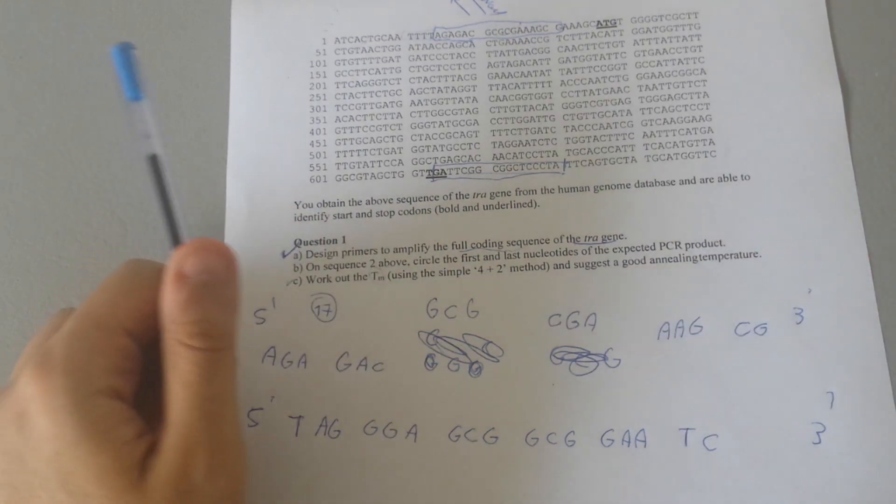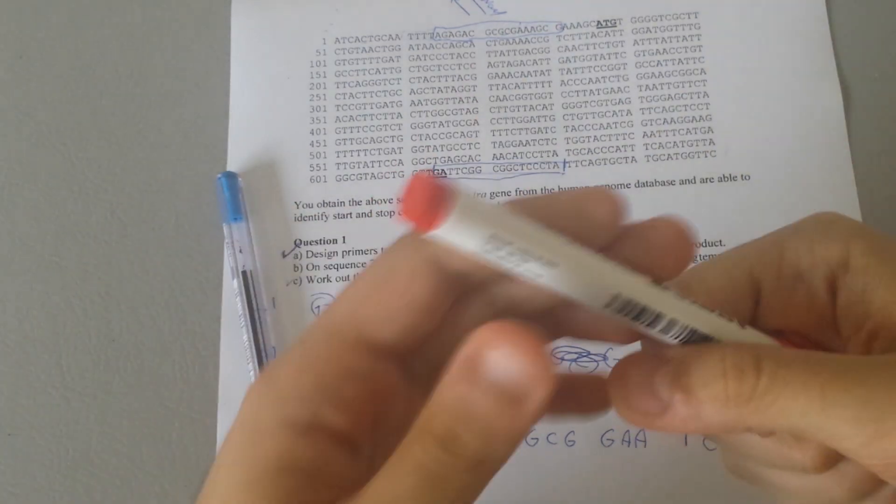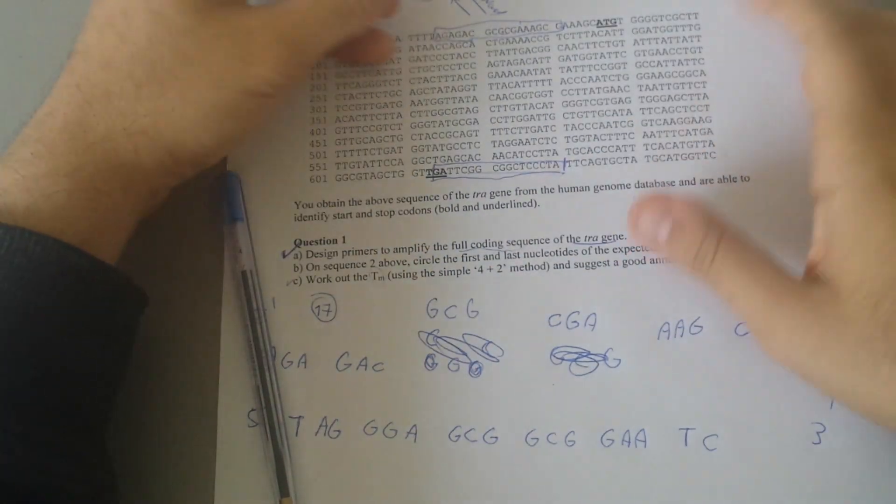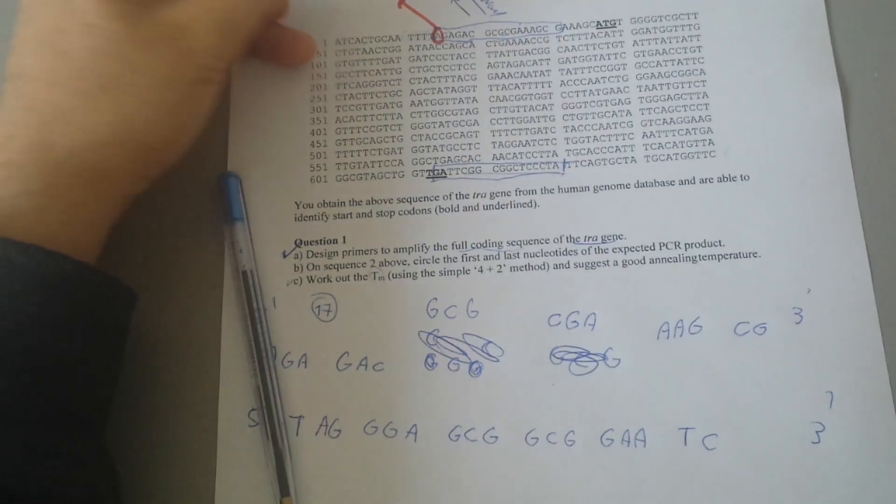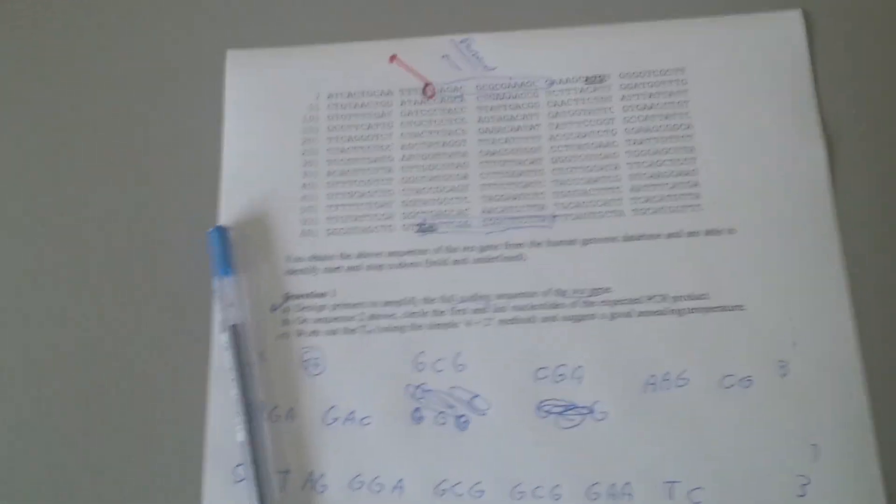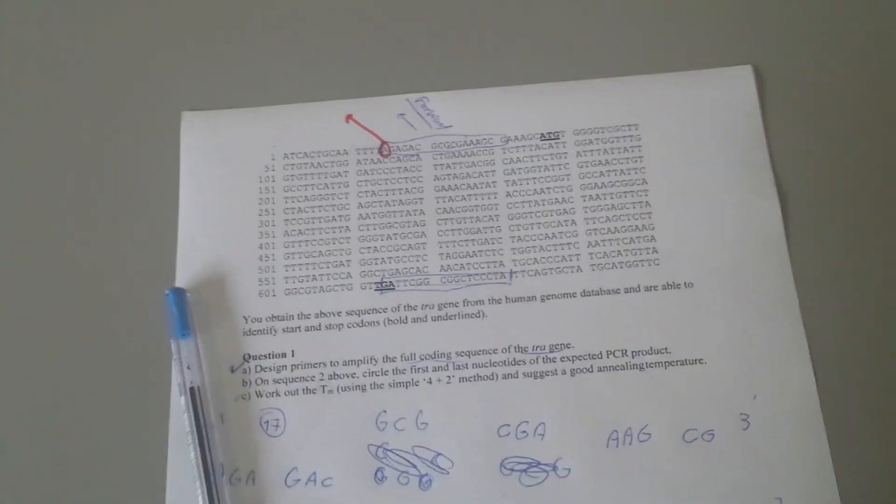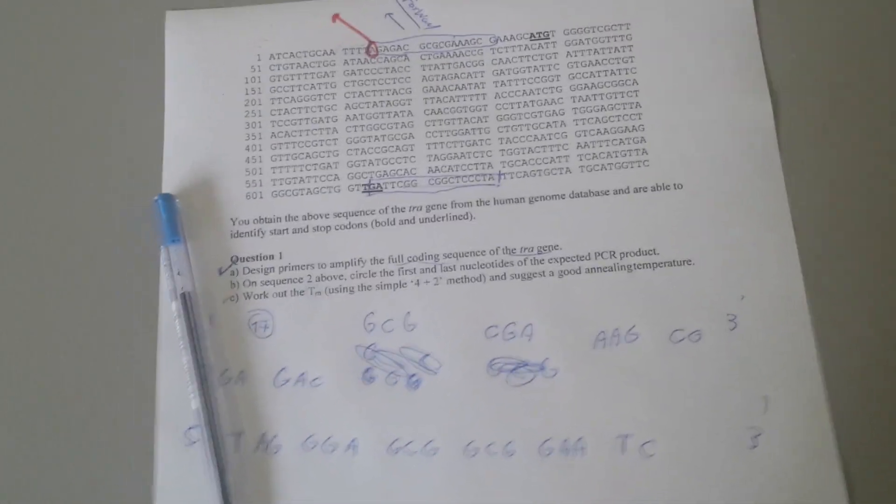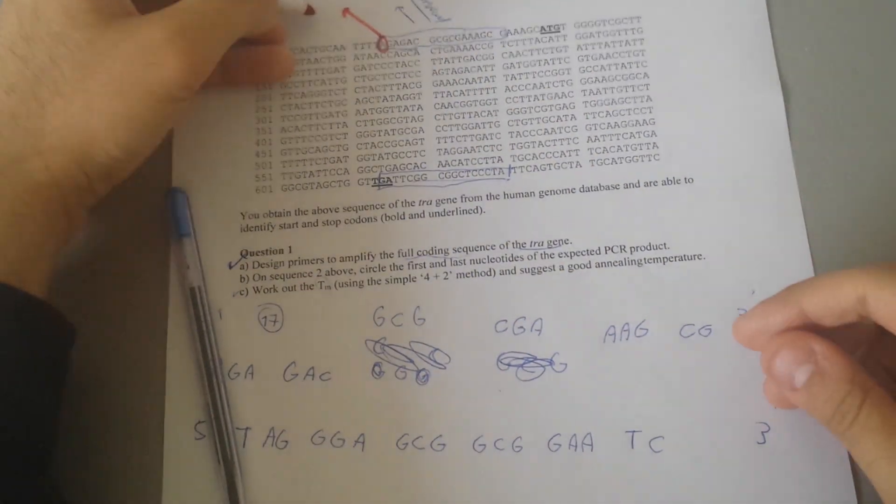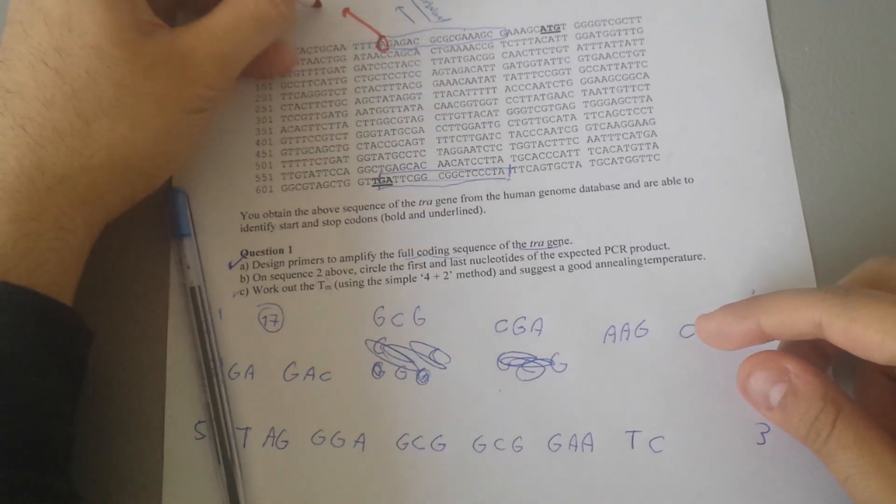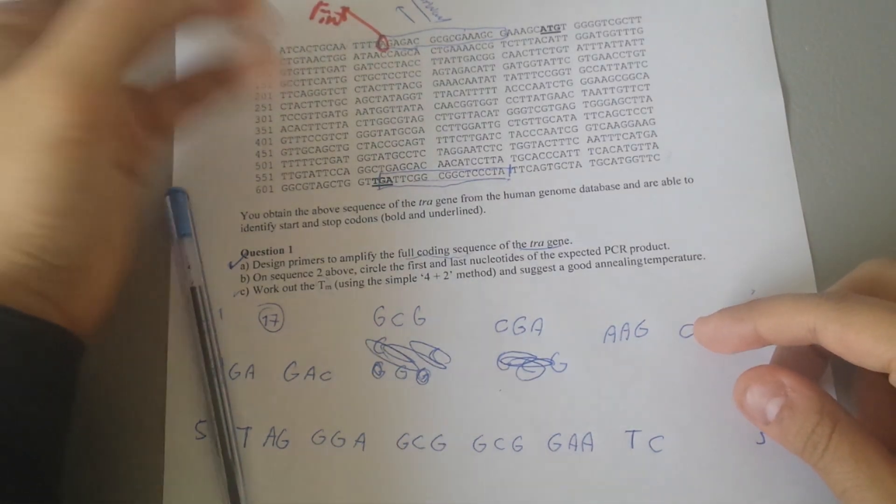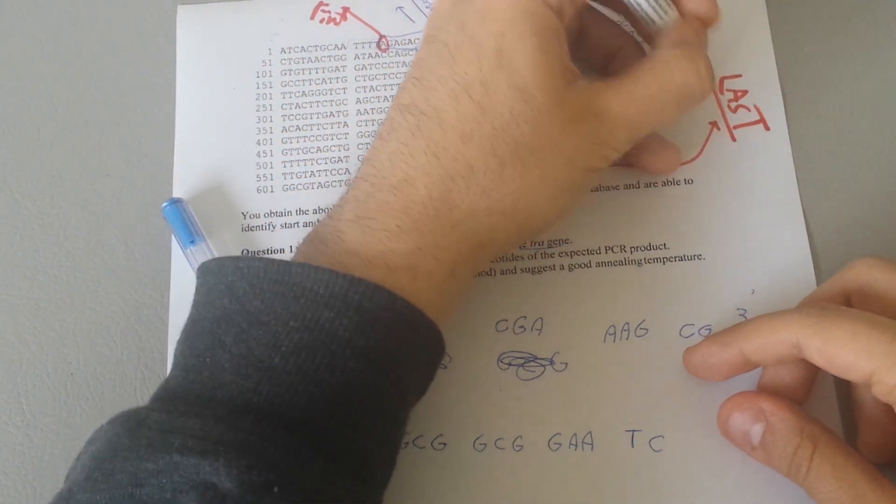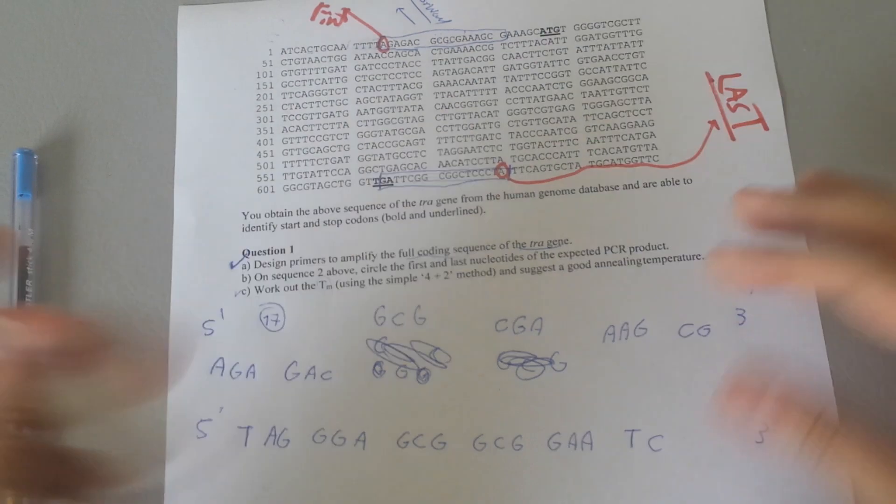The second question is asking you to circle the first and last nucleotides of the expected PCR product. So that is our first primer, that one A, so I'm going to circle that one. The last would be this one.